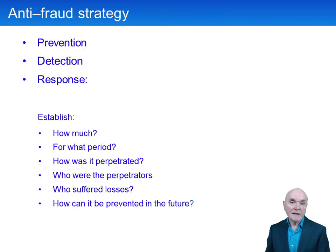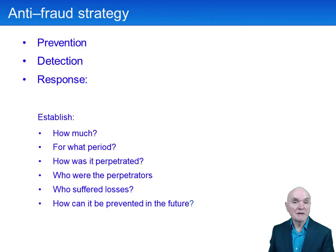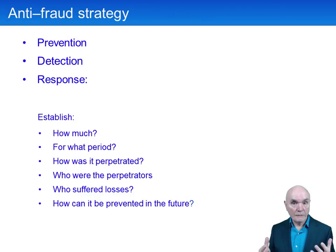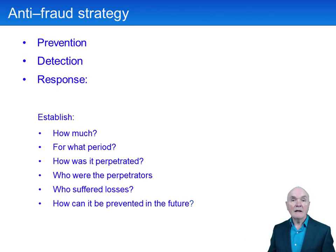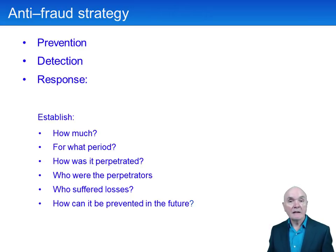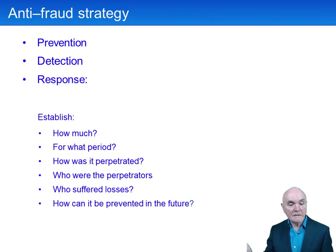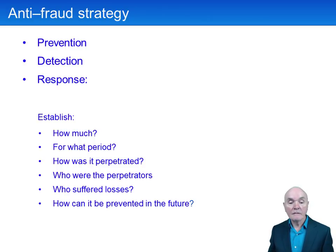An anti-fraud strategy has three strands. First of all, there is fraud prevention. This can be simple physical methods, like locking valuable inventory away. It can be making sure that cash is banked, making sure that requests for purchasing products are authorised. These are all methods of trying to prevent fraud happening in the first place. Good surveillance is another method of prevention.